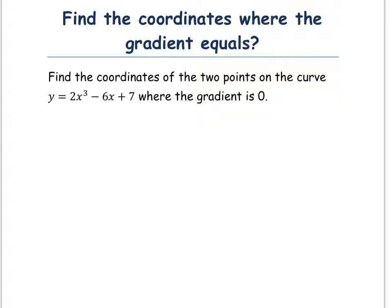So, firstly, y equals 2x cubed minus 6x plus 7. So if we differentiate that, we get dy by dx of 6x squared minus 6.